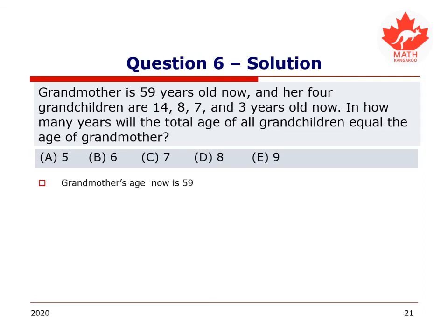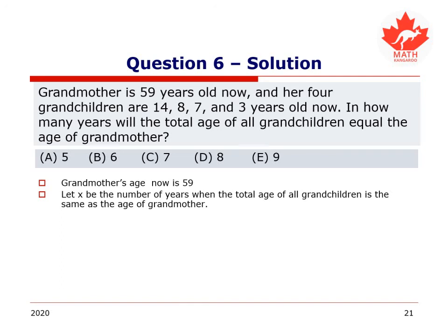Are we ready? Let's take a look. 14 plus 8 plus 7 plus 3. Grandmother's age is 59. And let's call x, I mean, what are we looking for here? The number of years before the total age of all the grandchildren is the same as the age of the grandmother. So let's call that x straight away. We know we are looking for that. So we have that after x years, our first grandchild is going to be 14 plus x years old. Our second is going to be 8 plus x years old. Our third is 7 plus x years old. Our fourth is 3 plus x years old. We are adding x to each of their ages. And then we're also adding x to grandmother's age, because she's not going to stay 59 forever. We're going to add x as well.